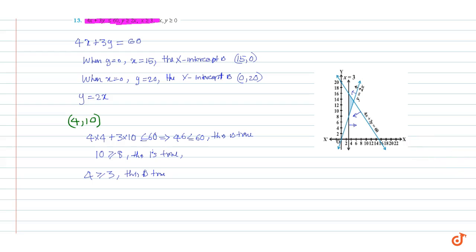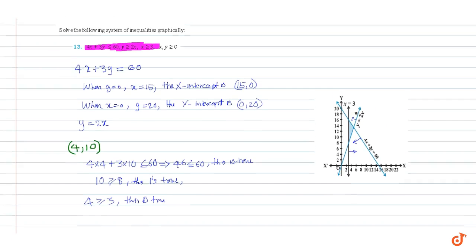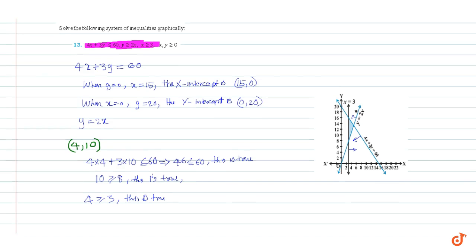The solid lines are used because we have both equality and inequality in each constraint. That is why the solid lines appear. So our feasible region is this triangular region — this is the feasible region and that is our graphical solution to the question.